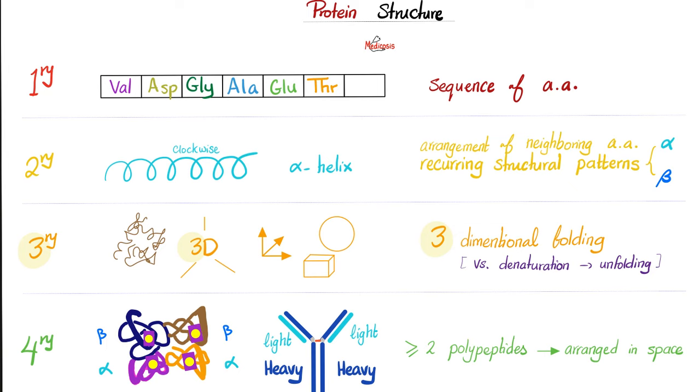How about the secondary protein structure? Just remember number two, because we have two patterns here. The alpha helix and the beta pleated sheets, which are nothing more but arrangement with the neighboring amino acids to give you these recurrent structural patterns. Hint, the alpha helix rotates clockwise.